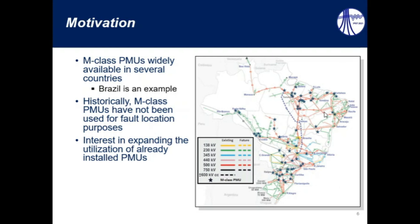But historically, the M-class PMUs have not been used for fault location purposes, due to that additional delay that we have explained in the previous slides. But there is a great interest in expanding the utilization of these already installed PMUs, in such a way that in this paper we try to respond to this question. Is the fault location based on M-class PMUs feasible? So, the goal of this paper is to investigate if there are evidences on whether M-class PMU data could be used for fault location application or not.